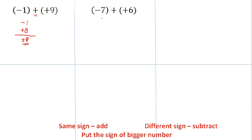Now look at the second example: minus 7 added to plus 6. In between the two integers there is an addition sign, so you have to add them. While adding, look at their signs — one is negative, one is positive. So we subtract: 7 minus 6 is 1. Put the sign of the bigger number — 7 is bigger, so the sign is minus. Answer: minus 1.